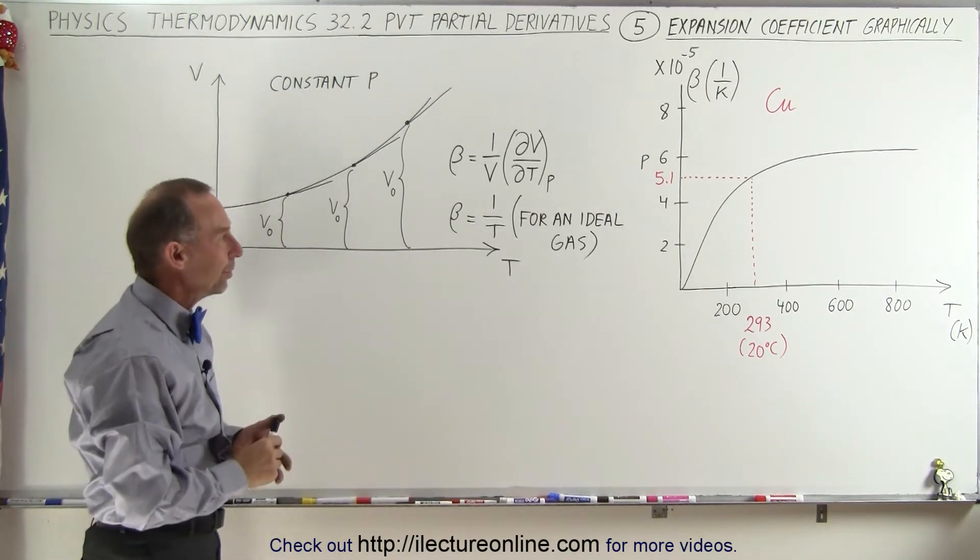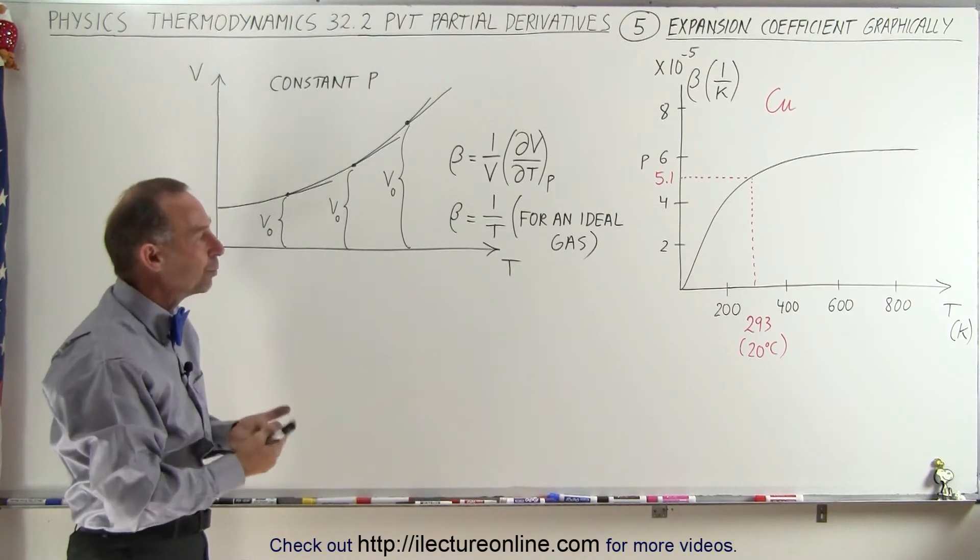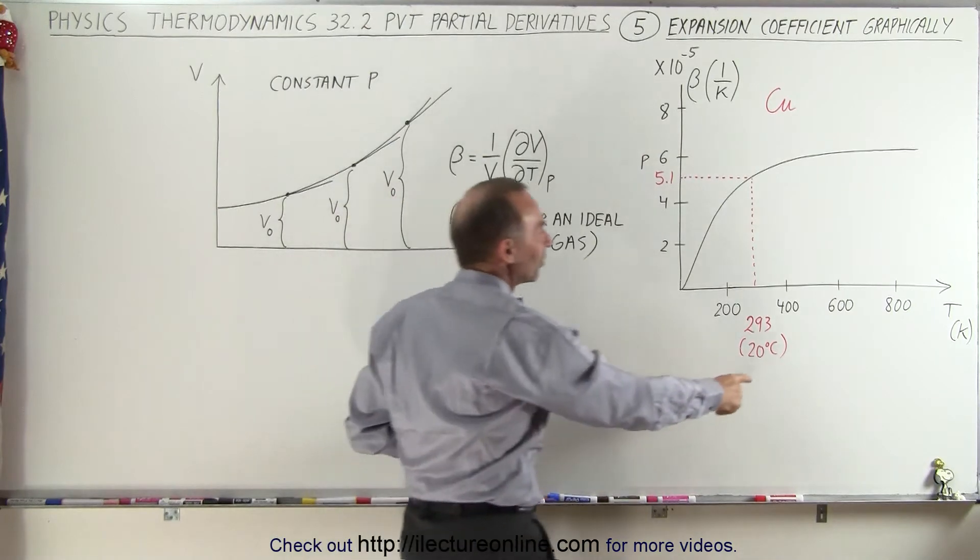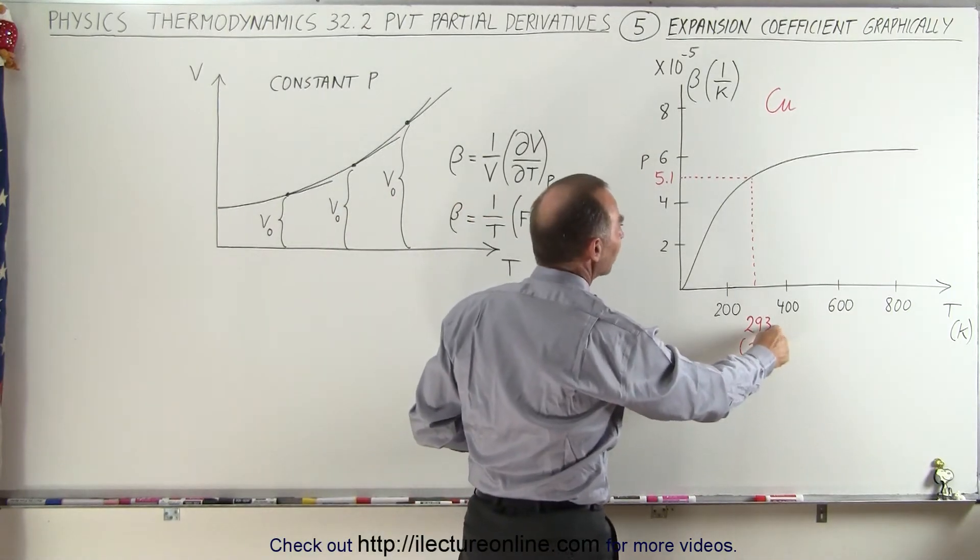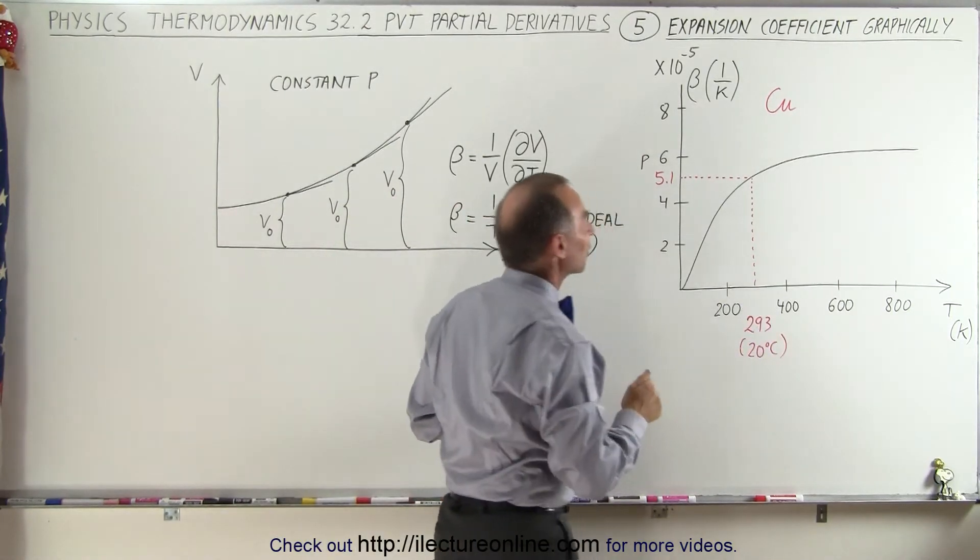What does it look like for copper? Copper will be solid at room temperature. So if we take 20 degrees centigrade, which is 293 Kelvin, what is the coefficient of volume expansion look like?